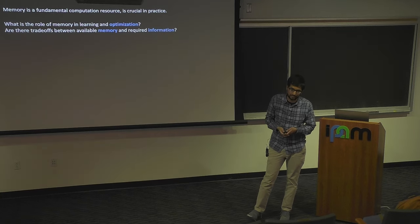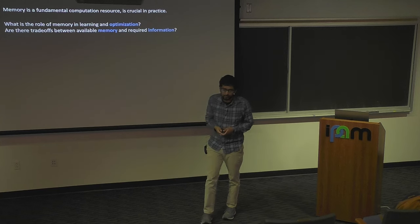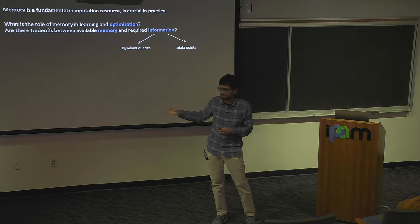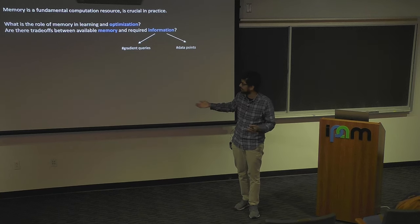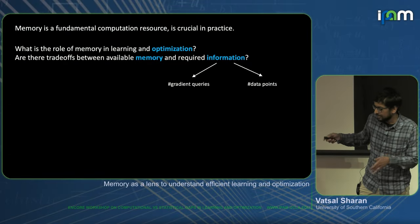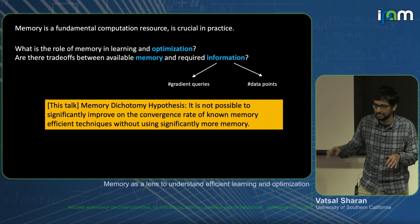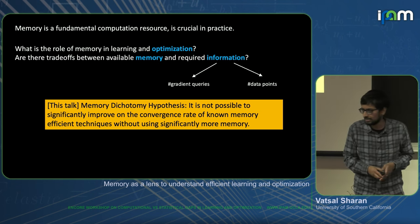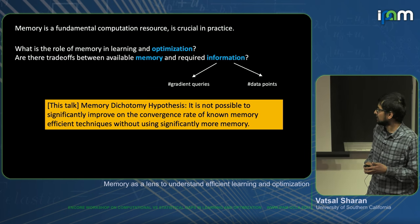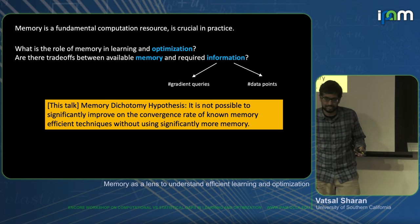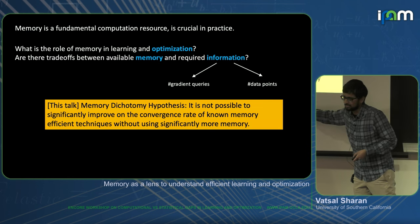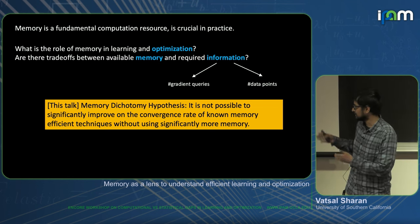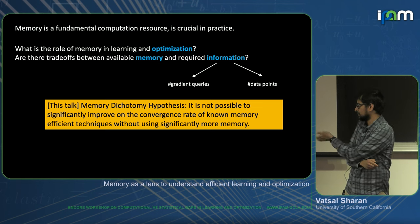The talk today will be on understanding the role of memory in learning and optimization — in particular, trying to understand if there are trade-offs between the memory available to the algorithm and the information resources it uses. Two things I'll consider are the number of gradient queries or the number of data points that the algorithm takes. An overarching theme is that there seems to be a very sharp dichotomy in the algorithmic landscape: it's not possible to significantly improve on the convergence rate of known memory-efficient techniques without using significantly more memory — often quadratic memory.